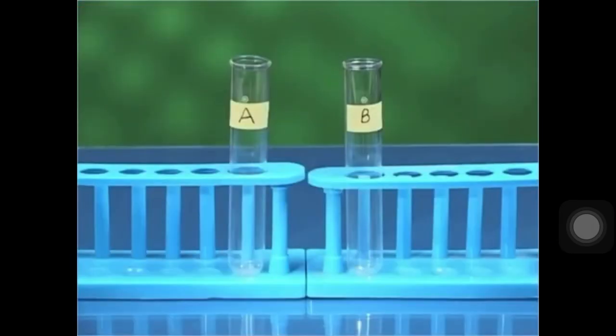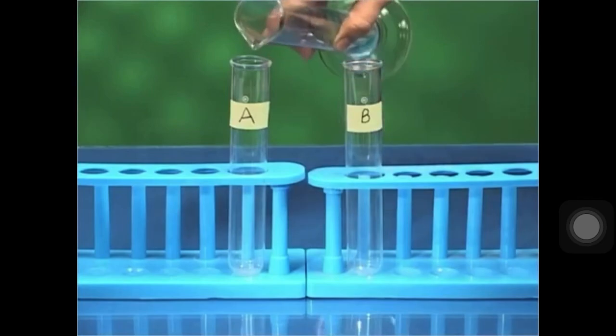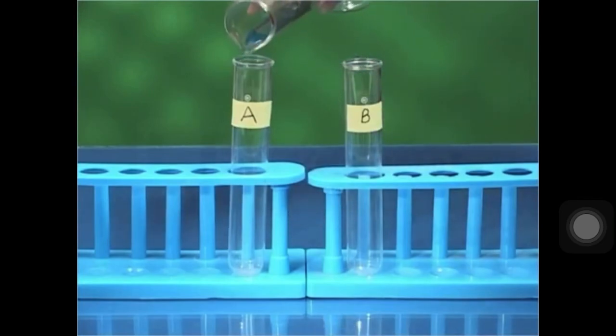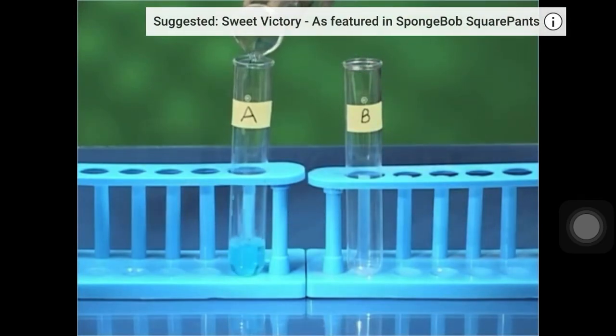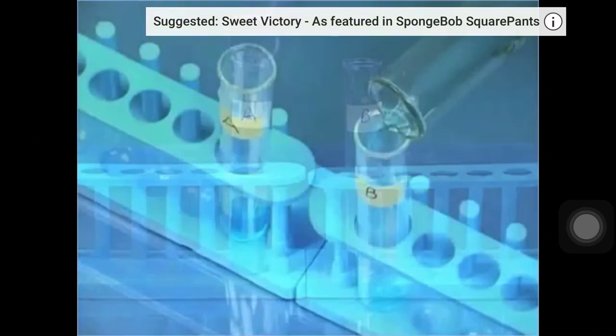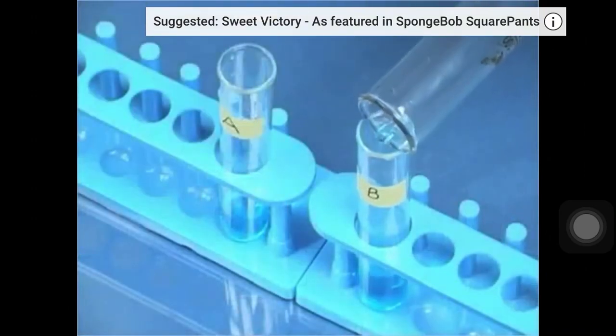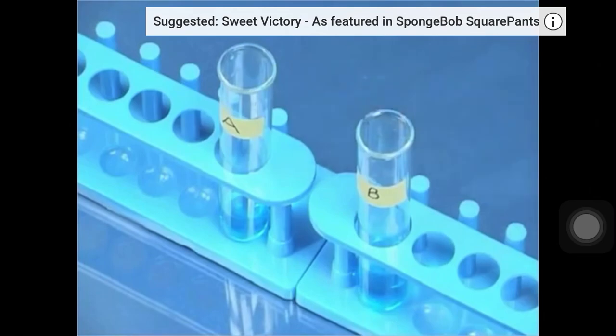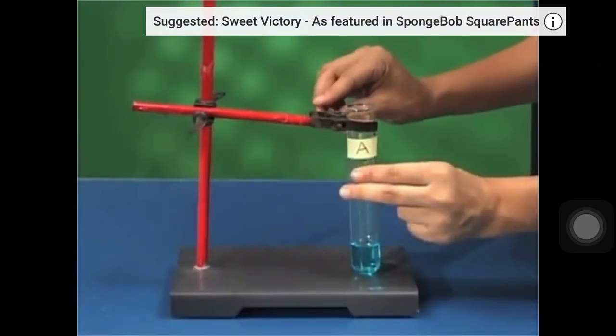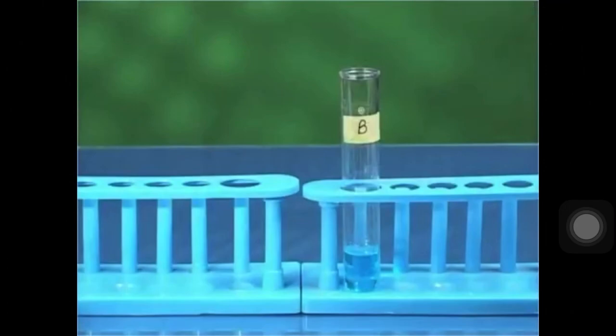Take two test tubes marked as A and B and in each test tube pour about 10 ml of copper sulfate solution. Fix test tube A on the clamp stand and keep test tube B as a controlled sample in the test tube stand.